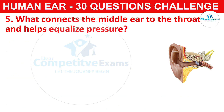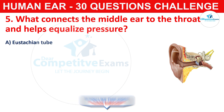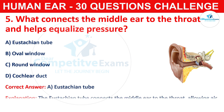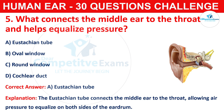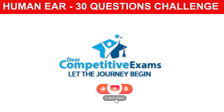Question number five: what connects the middle ear to the throat and helps equalize pressure? Your options are the Eustachian tube, oval window, round window, or cochlear duct. The correct answer is A, that is the Eustachian tube. The Eustachian tube connects the middle ear to the throat, allowing air pressure to equalize on both sides of the eardrum.